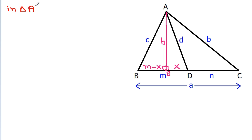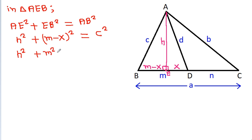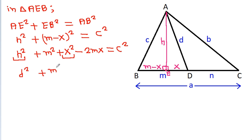In triangle AEB: AE² + EB² = AB², so h² + (m − x)² = c², which gives h² + m² − 2mx + x² = c². Substituting h² + x² = d², we get d² + m² − 2mx = c². Call this equation 2.